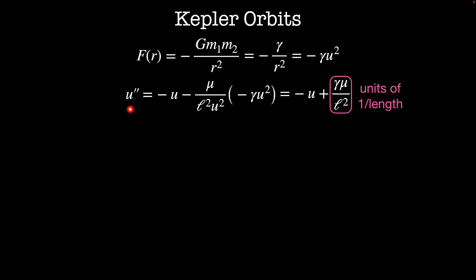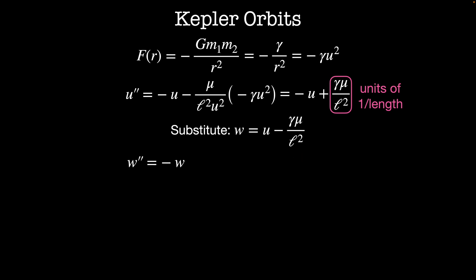Then the equation of motion for this orbit is given by u'' equals minus u minus mu divided by L squared times u squared times minus gamma u squared. The two u squared terms cancel out and we're left with minus u plus the constant gamma mu divided by L squared. To solve this equation, we just need to make the substitution w equals u minus the constant gamma mu over L squared, and this reduces to the equation for a simple harmonic oscillator. So w(theta) equals some constant A times cosine(theta minus delta).